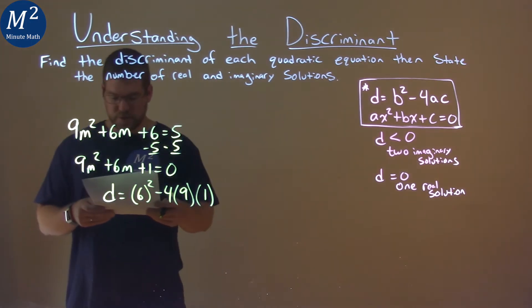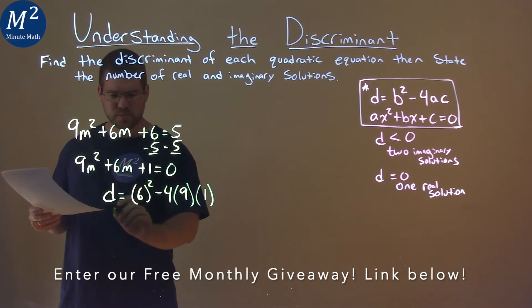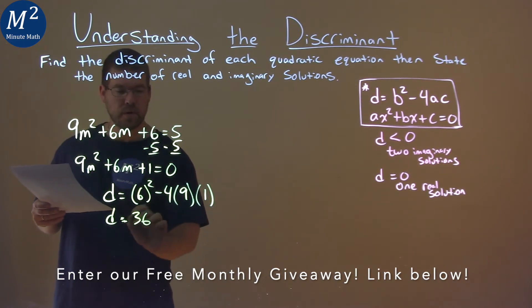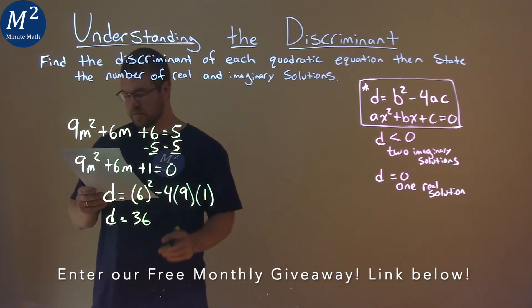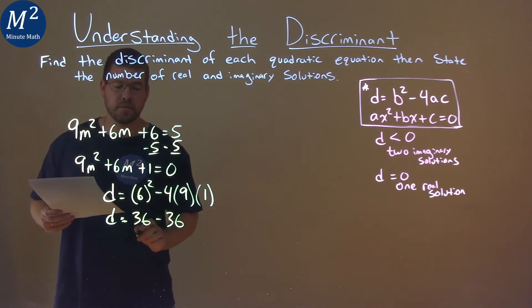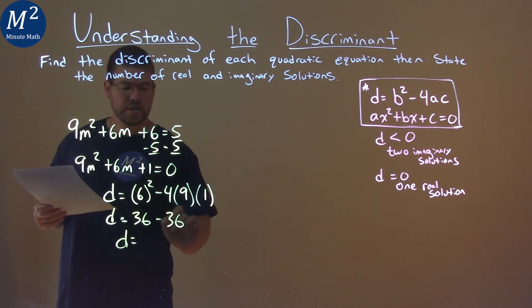And now we want to solve this. 6 squared is 36, and 4 times 9 times 1 is also 36. And we're subtracting the two. Well, 36 minus 36 is 0.